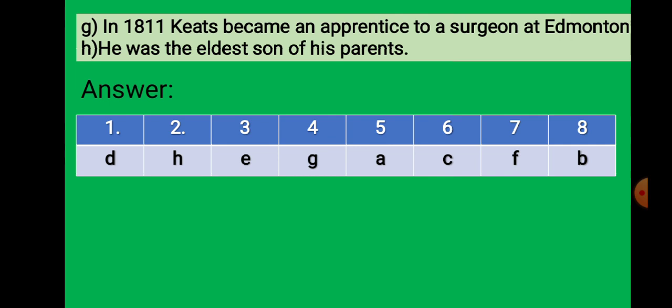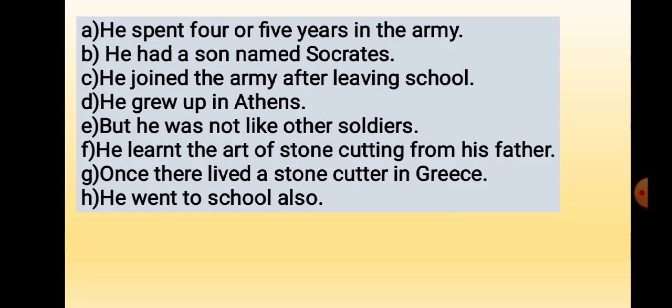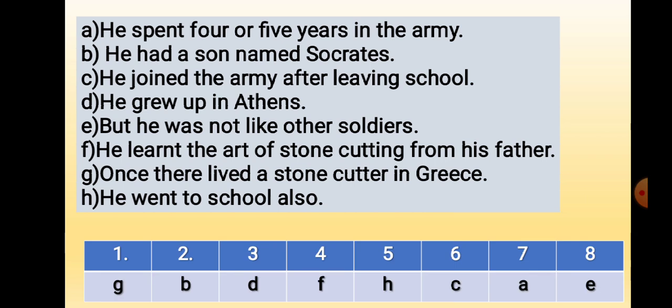Now the second rearrange. A: He spent four or five years in the army. B: He had a son named Sophocles. C: He joined the army after leaving school. D: He grew up in Athens. E: But he was not like other soldiers. F: He learned the art of stone cutting from his father. G: Once there lived a stone cutter in Greece. H: He went to school also. You have to draw two rows — in the first row give the letter, in the second row give the corresponding number.